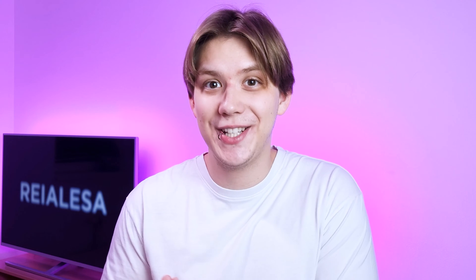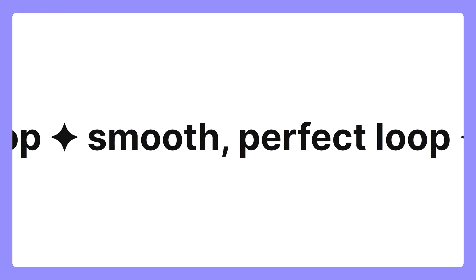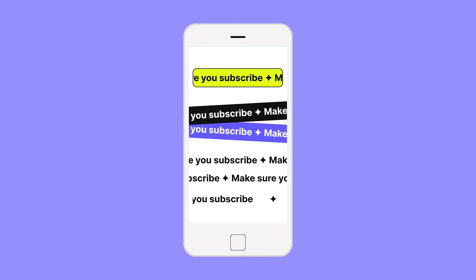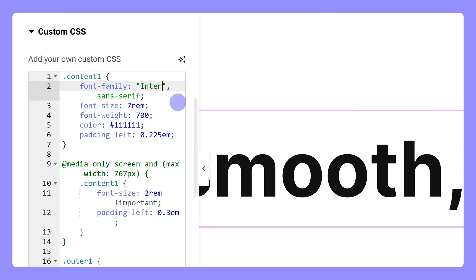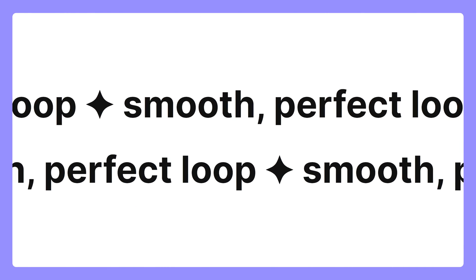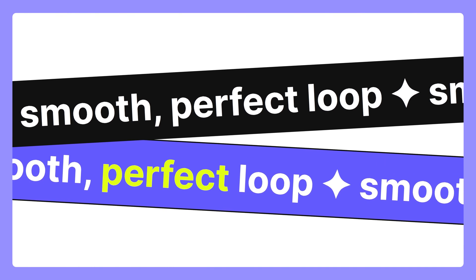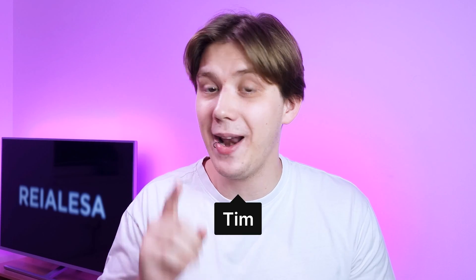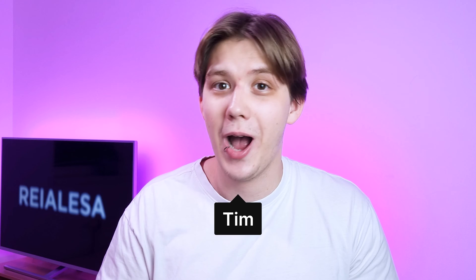I'm going to show you how you can create sliding text that is smooth and that loops perfectly without any plugins. We're also going to make it responsive. I'm also going to show you how you can adjust it, reverse it, and rotate it, which will help you achieve some awesome effects. We'll just be using a little bit of code, but if you give me a couple of minutes of your time, I bet I can teach you how to do this.